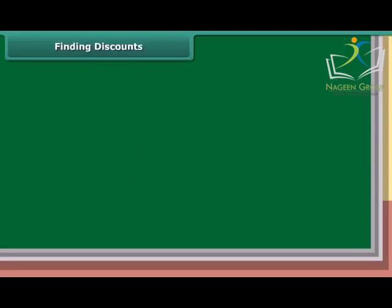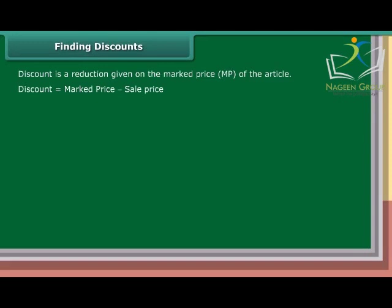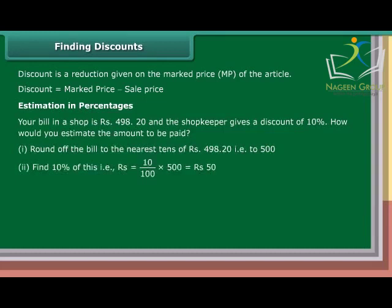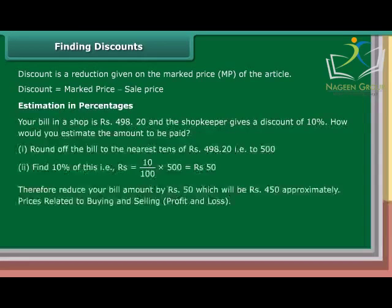Finding Discounts: Discount is a reduction given on the market price (MP) of the article. Discount equals market price minus sale price. Estimation in percentages: Your bill in a shop is Rs. 498.20 and the shopkeeper gives a discount of 10%. Round off the bill to the nearest Rs. 500. Find 10% of this: Rs. 10 upon 100 into 500 equals Rs. 50. Therefore, reduce your bill by Rs. 50, giving approximately Rs. 450.